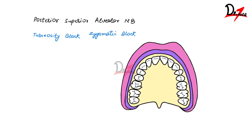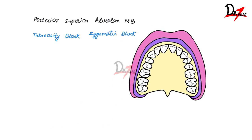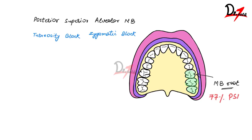First, let us understand what structures are anesthetized when we give this block. The maxillary third molar, maxillary second molar, and also the maxillary first molar are anesthetized — but there is an exception for the maxillary first molar: the mesiobuccal root is not anesthetized. This is because only in 77% of cases does the PSA nerve innervate the mesiobuccal root of the first molar. If not the PSA, the middle superior alveolar nerve innervates it.